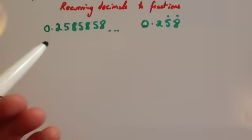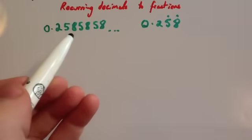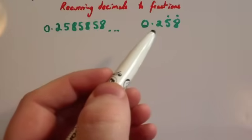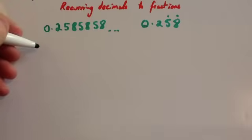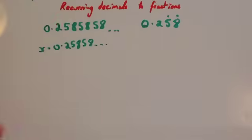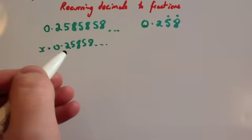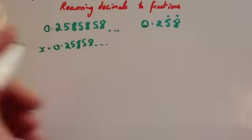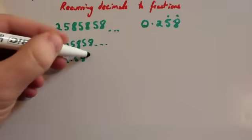Now we're going to look at a recurring decimal that's slightly different from the others: 0.2585858... Notice the 2 doesn't recur — it's just the 5 and 8 that are recurring. We'd write it as 0.258 with the dot over the 5 and the 8 to show the recurring chain. To change this into a fraction, let x = 0.25858... Whenever you convert a recurring decimal to a fraction, you want the two equations to have just the recurring part after the decimal point. The 2 doesn't recur, so we times by 10 first: 10x = 2.5858...